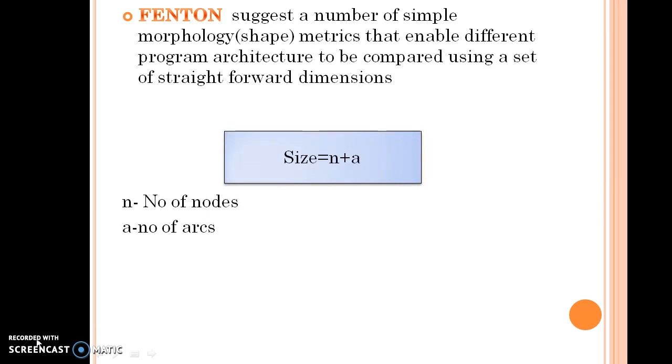Fenton suggests a number of simple metrics that enable different program architectures to be compared using a set of straightforward dimensions. Using the formula size equals N plus A, where N is the number of nodes and A is the number of arcs.